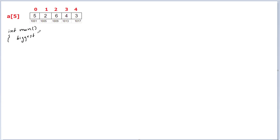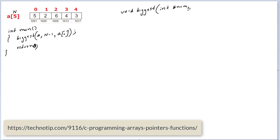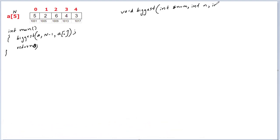Inside the main method, I'll call a function called 'biggest' and pass the base address present in the name of the array, the last index which is N minus one, and we assume the first element is itself the biggest. So we pass a[0] and return zero. Now let me define this method 'biggest'. Since we are passing the base address, we need a pointer variable here, which I'll call 'star num'. N is the length of the array, and the last parameter a[0] is the assumed biggest element.